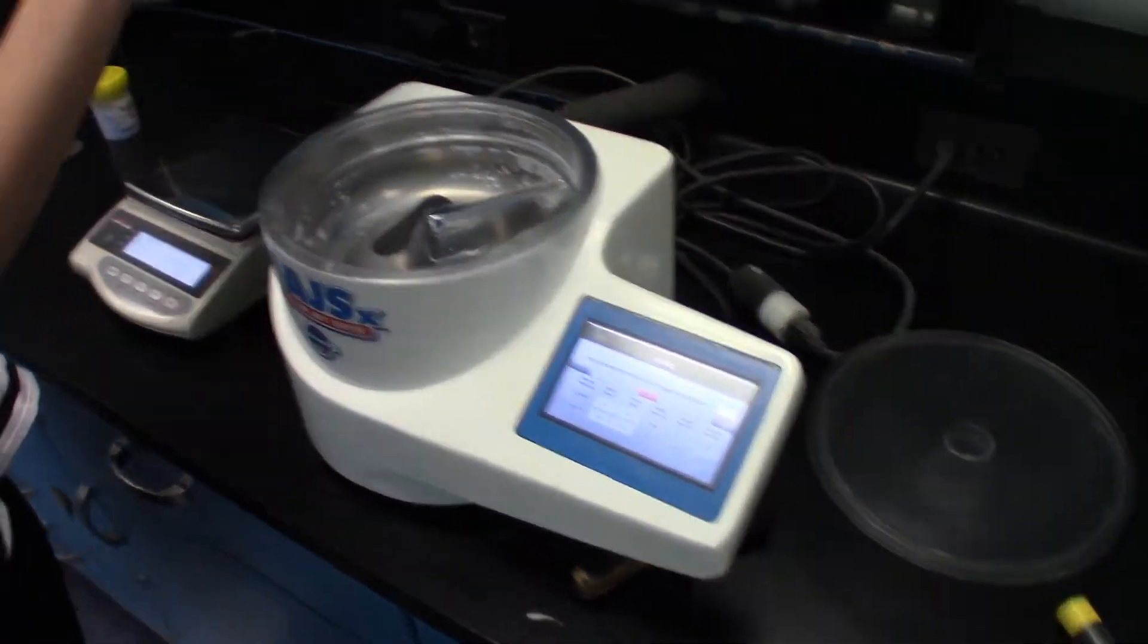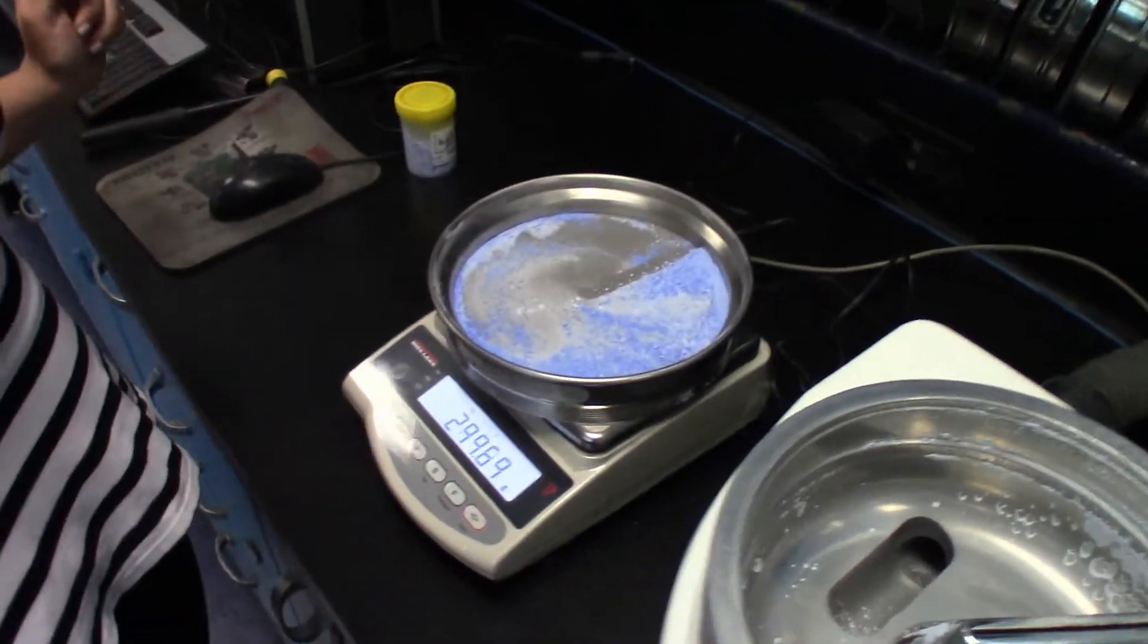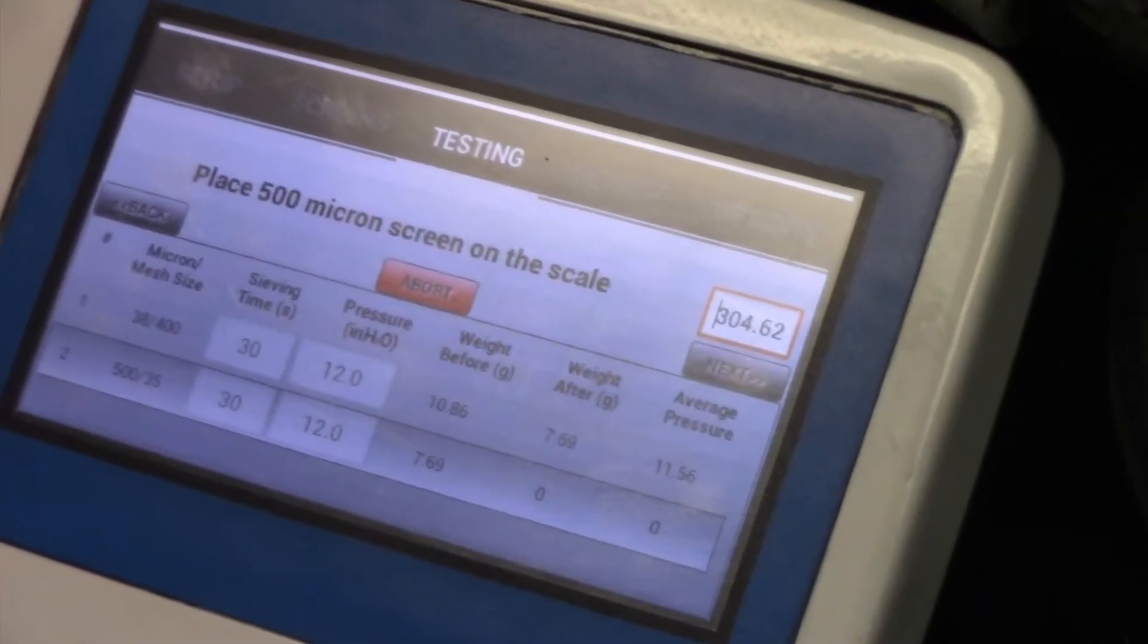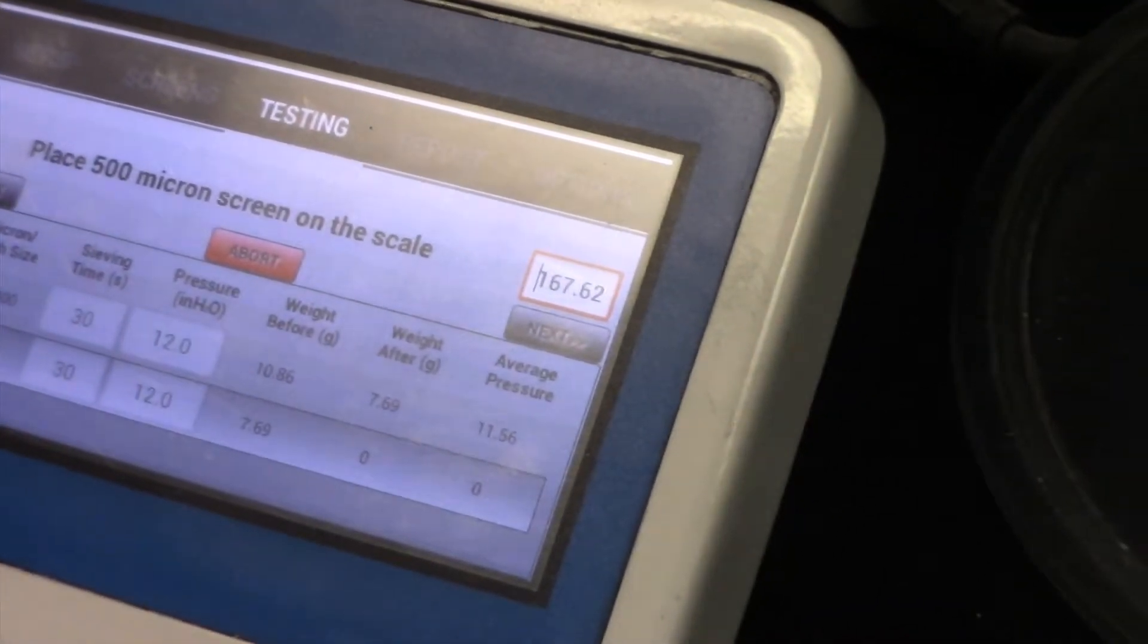With the retained sample, we're going to weigh it. Next. We're going to place this one off to the side. I'm just going to place it on the sieve for now.